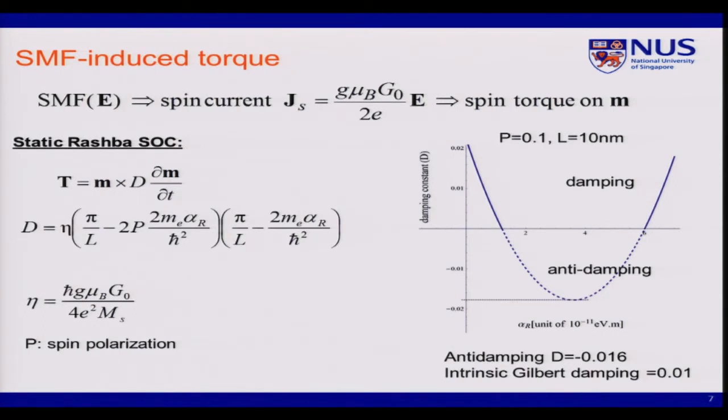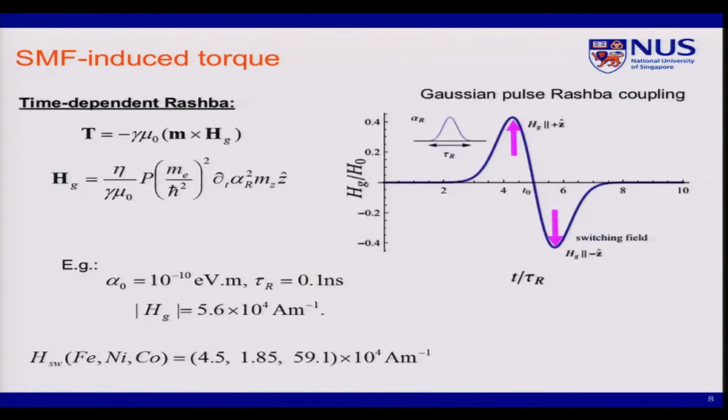So I show that by tuning this Rashba coupling, the damping torque can be made to be damping or anti-damping. Now in the case of time-dependent Rashba, I have another torque, which is a field-like torque, which means it's not damping or anti-damping but just a field. So I show that by choosing some value of the Rashba and the duration of the modulation, this torque can be large enough to switch the magnetization. It can be applied in magnetization switching.